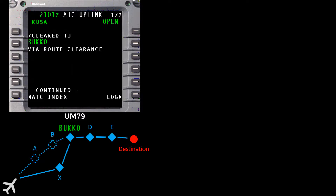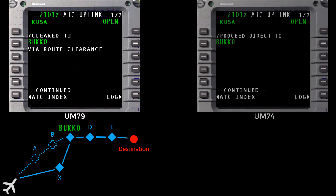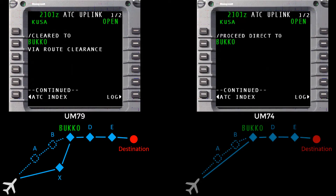Bucco is a waypoint name already on our existing flight plan, and there is at least one waypoint ATC wants us to fly to on our way to Bucco. Notice that this is not the same as proceeding direct to Bucco. If ATC wanted us to proceed direct to Bucco, the Uplink route message would have been a UM74 and looked like this — it would have said 'proceed direct to Bucco.' These are clearly two distinct, different messages and ATC instructions.